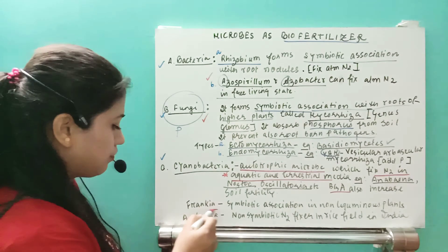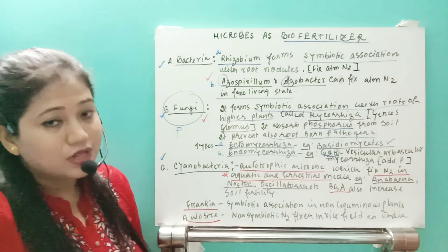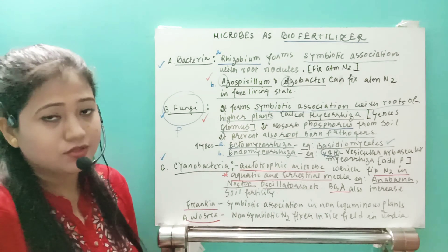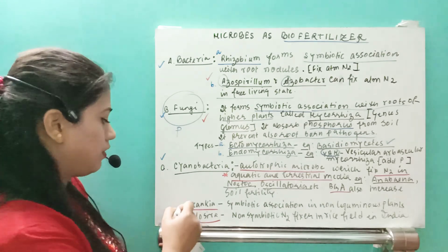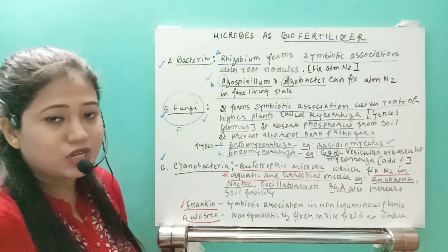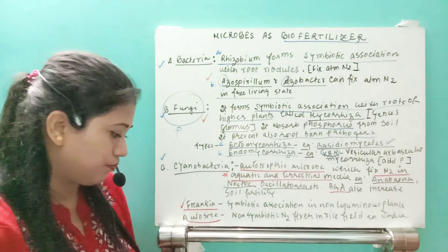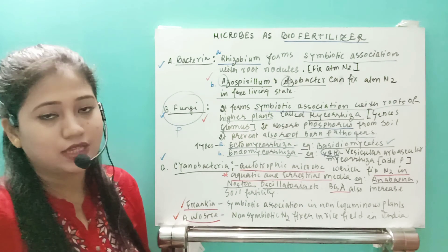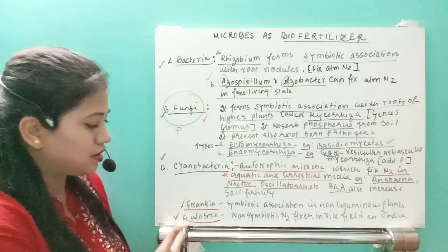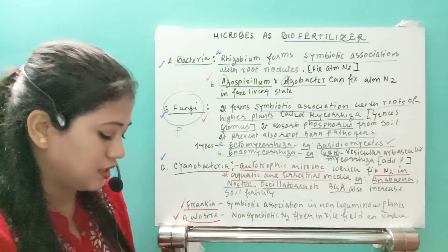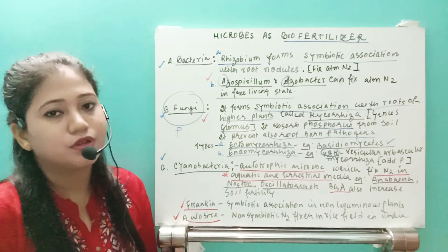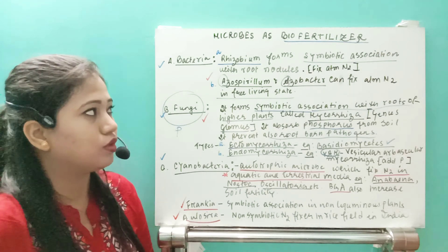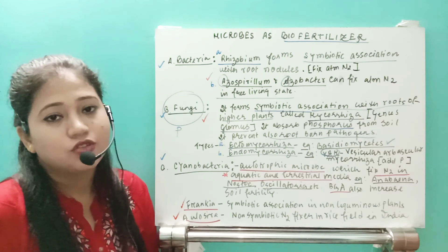Additional examples: Frankia is a symbiotic nitrogen fixer in non-leguminous plants, helping add nitrogen to the soil. Azolla is a non-symbiotic nitrogen fixer found in rice fields in India. These examples are important to remember as questions have been asked about them. Remember all these biofertilizers - that's all about this video.